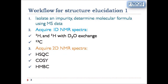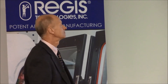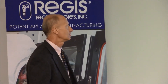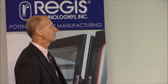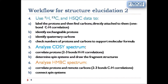Then we can start acquiring 2D NMR spectra. Because there are so many two-dimensional NMR methods, we try to limit our activities to three methods: HSQC, COSY, and HMBC. HSQC data together with H1 and carbon-13 data will help us to label the protons and find the carbons directly attached to those protons.